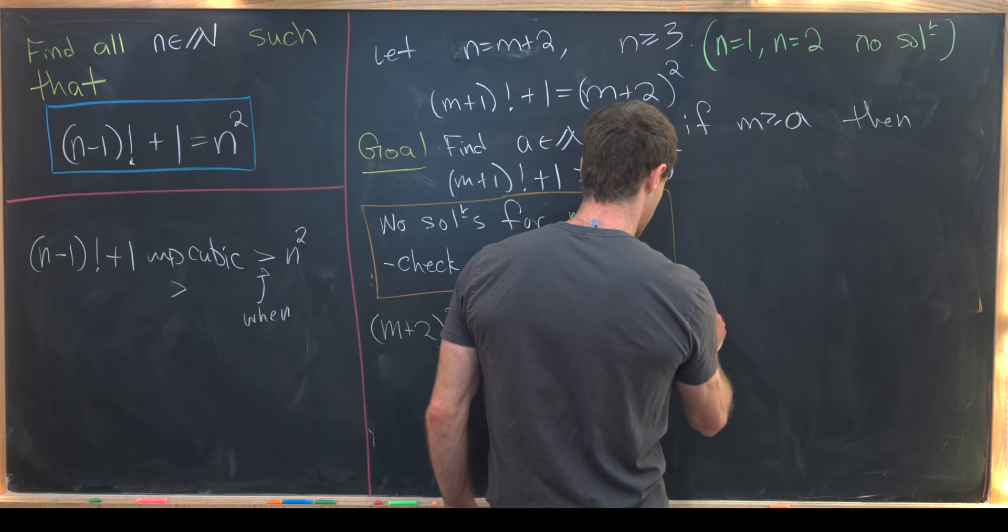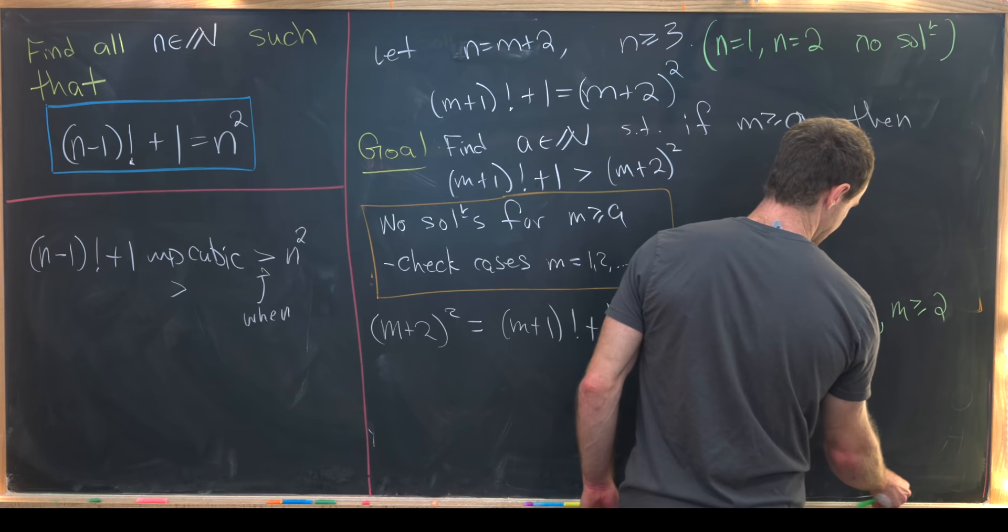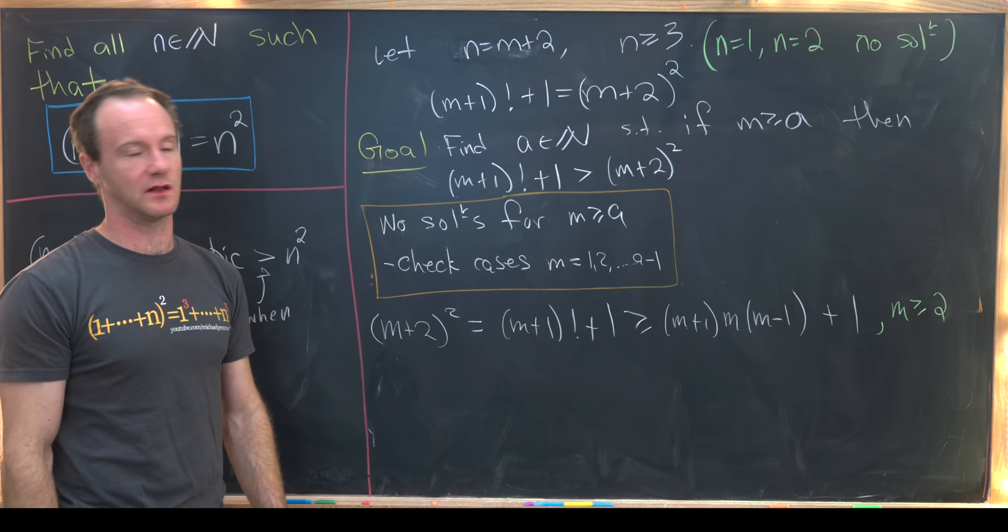But let's notice that m plus 1 factorial plus 1 is most definitely bigger than or equal to m plus 1 times m times m minus 1 plus 1. So we have equality here if m is equal to 2 but we have a strict inequality if m is bigger than 2. So that means we've got m bigger than or equal to 2 where this inequality right here is satisfied.